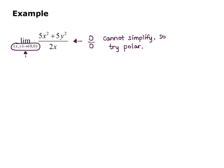And notice that x, y is going to 0, 0, so r goes to 0 since r squared equals x squared plus y squared. And now I just switch to polar using my polar identities. So this is the limit as r goes to 0, and if I factor a 5 out of the numerator, I get 5 times x squared plus y squared. So that's equivalent to 5r squared over 2r cosine theta.